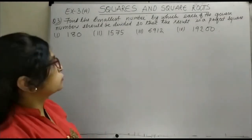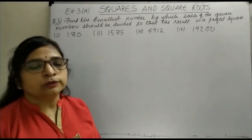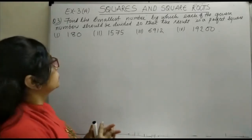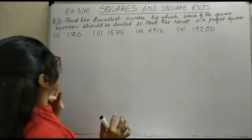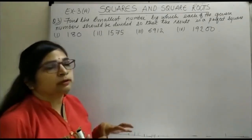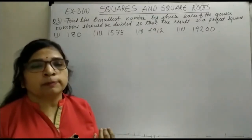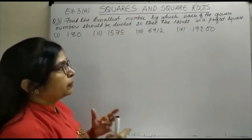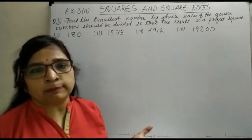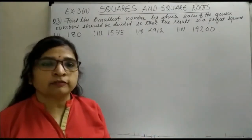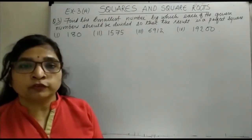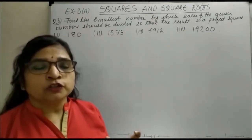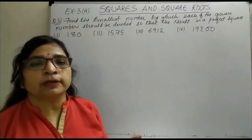Hello everyone. Today in squares and square roots we are going to see how a given number which is not a perfect square can be made a perfect square by dividing it. The question is: find the smallest number by which each of the given numbers should be divided so that the result is a perfect square. In division, whatever number is unpaired, we divide by that same number.